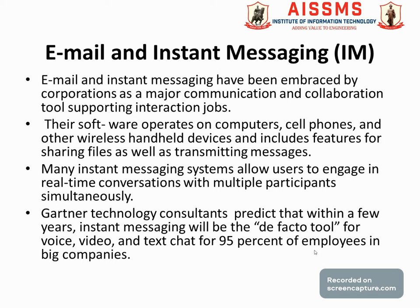Email and instant messaging have been embraced by corporations as major communication and collaboration tools supporting interaction on the job. This software operates on computers, cell phones, and wireless handheld devices. It includes features for sharing files as well as transmitting messages. Real-time examples of this software include WhatsApp and Telegram, which can be installed on computers, cell phones, and wireless devices. Many instant messaging systems allow users to engage in real-time conversation with multiple participants simultaneously.